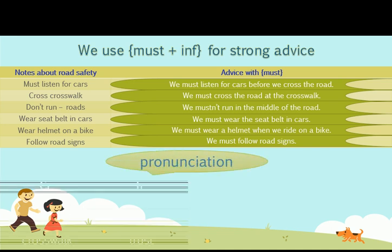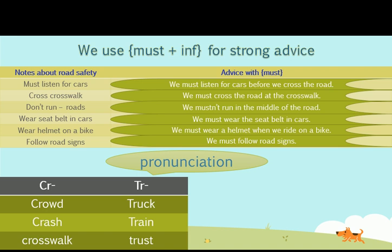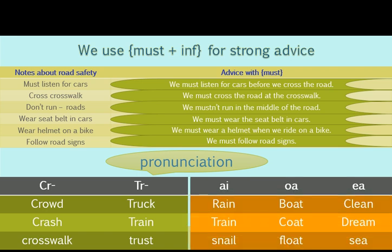Pronunciation: CR says 'cr' — crash, crosswalk. TR says 'tr' — truck, train, trust. AI says the 'a' sound — rain, train, snail. OA says 'o' — boat, coat, float. EA says 'e' — clean, dream.